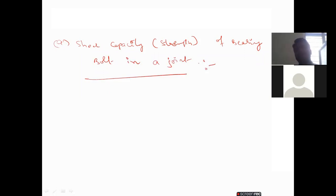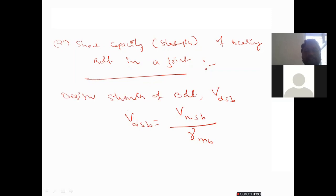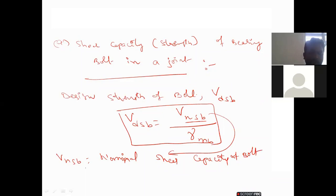In bolted connections, calculation involves only shear capacity and bearing capacity. The design strength of bolts formula is V_dsb = V_nsb / γ_mb, where V_nsb is the nominal shear capacity of a bolt, and γ_mb is the partial safety factor.